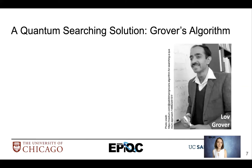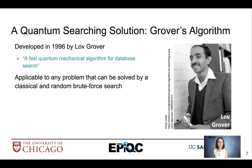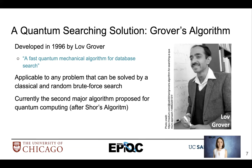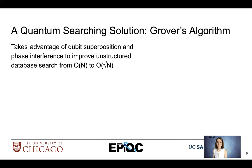Here we introduce a quantum solution: Grover's algorithm. Grover's algorithm was developed in 1996, and it is applicable to any problem that can be solved classically by a random brute force search. It's a major algorithm proposed for quantum computing, and it's probably one of the most popular right behind Shor's algorithm. Grover's algorithm takes advantage of qubit superposition and phase interference to improve unstructured database search from O(N) to O(√N).